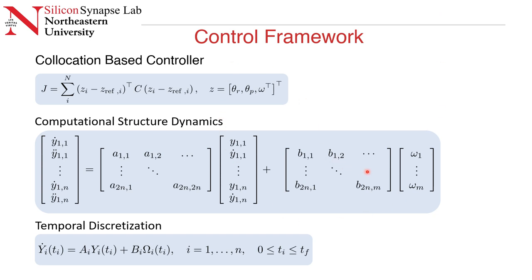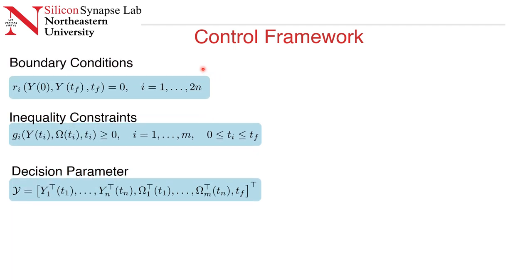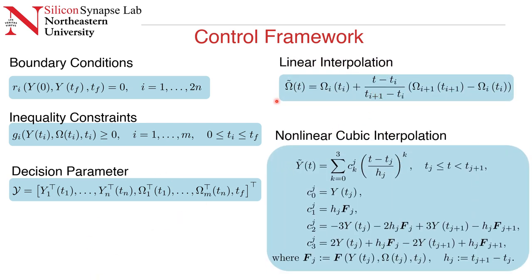This equation we get by performing temporal discretization of the above computational structure dynamics. All the capital Ys are the computational structure response at ith discrete time and omega consists of regulator action at the discrete time. We also consider 2N boundary conditions to enforce the continuity of the computational structure, while the inequality constraints limit the actuation stroke from the low power regulators. We stack the states and the regulator inputs to form our decision parameter. To approximate the non-linear dynamics, we use polynomial approximation method. Regulators actions were approximated using linear interpolation, while we interpolate the computational structure states by using non-linear cubic interpolation.